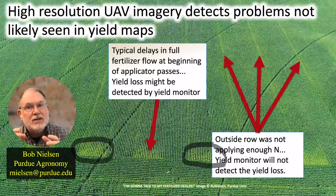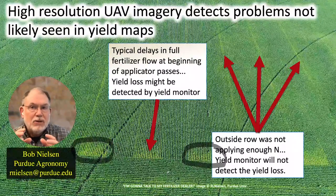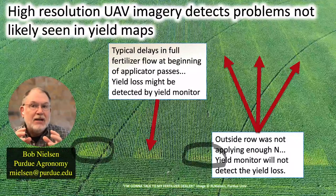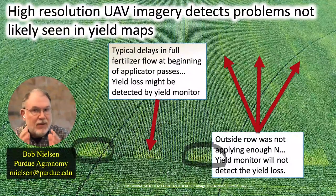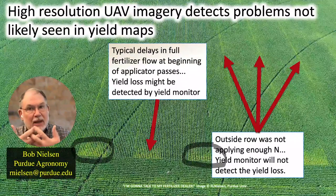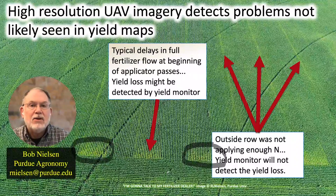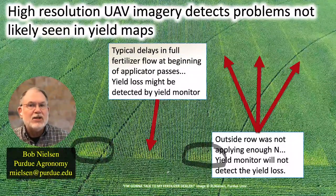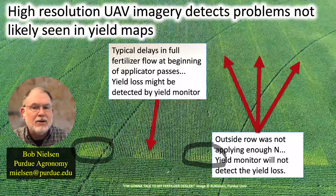It's nothing to sneeze at. But the problem is that because it's individual rows, the yield monitor and yield map data will likely never detect that yield loss, because those deficient rows will always be blended with the other rows coming into the combine. Again, one of the advantages of this high-resolution drone imagery is we can spot problems that we might not be able to pick up with the yield monitor. And yet if we can spot them, identify them, determine the cause, and correct the situation, we're going to increase yields on that field.